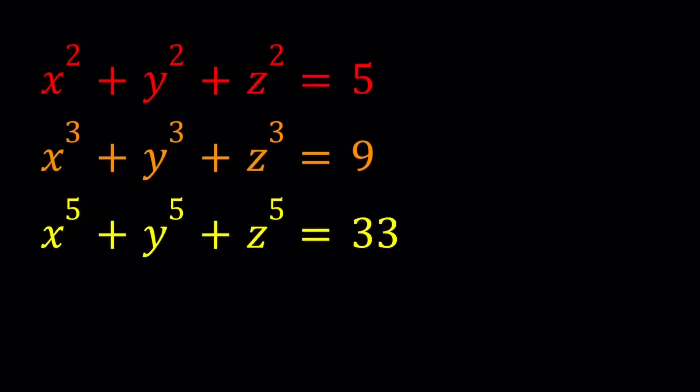Hello everyone. In this video we're going to be solving a homemade polynomial system. We have x squared plus y squared plus z squared equals 5, x cubed plus y cubed plus z cubed equals 9, and x to the fifth power plus y to the fifth power plus z to the fifth power equals 33.